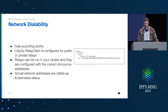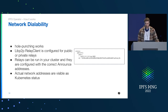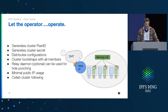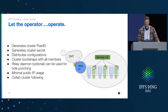Hole punching works. You get content addressed to the network correctly, using a network that is dialable. And you're not doing something silly like spinning up a bunch of load balancers and using up all your IP addresses. Let the operator operate — all this stuff gets set up for you without having to think about anything.